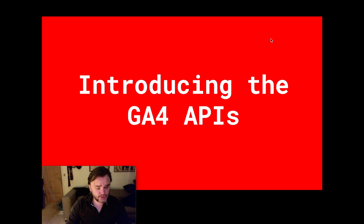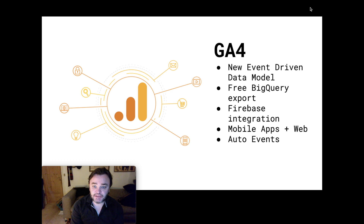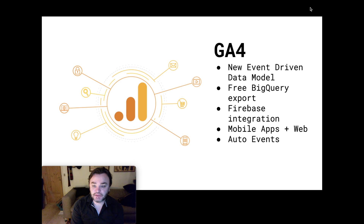Introducing the new GA4 API - just a quick look at what GA4 is overall. It's the next iteration of Google Analytics, going back from its Urchin days all the way through to Universal Analytics and now GA4. It's the first one that's actually got a completely new data model - it's all event-driven, so it really is a clean break from the old data model. But it can still use GTAG, Google Tag Manager, and data layer, so it's not as big a migration as it could have been.